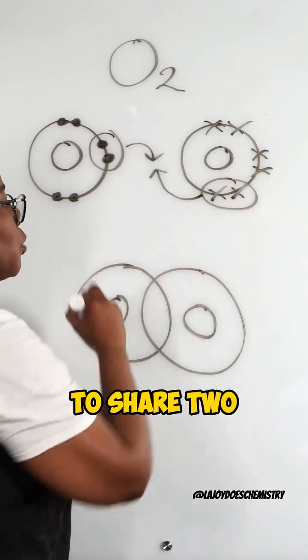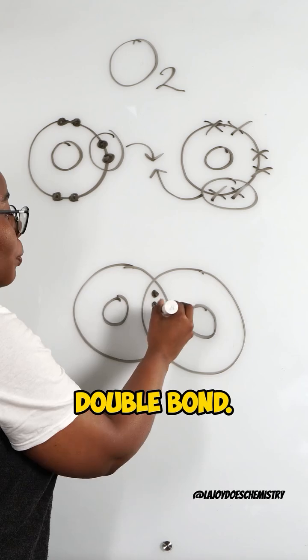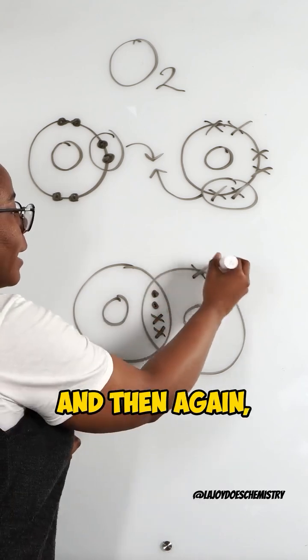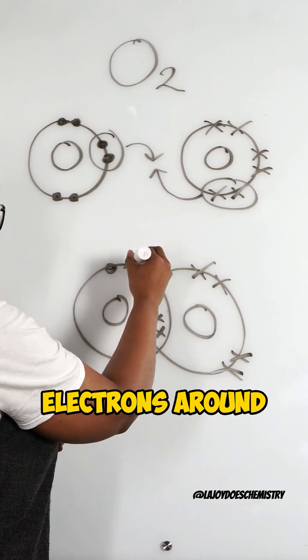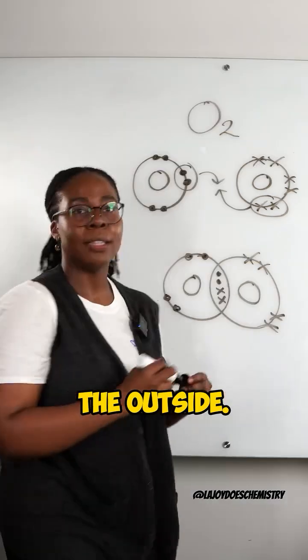So they're going to share two each, giving a double bond and then again the non-bonding electrons around the outside.